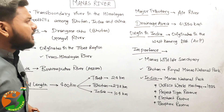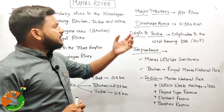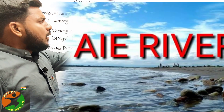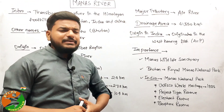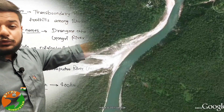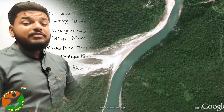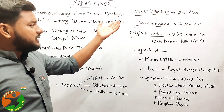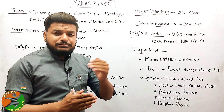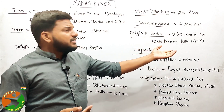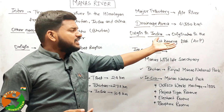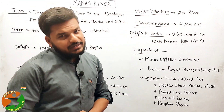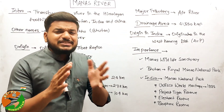The drainage area of the Manas River is 41,350 square kilometers. When this river enters India, it comes through Arunachal Pradesh — specifically from the West Kameng district in Arunachal Pradesh.